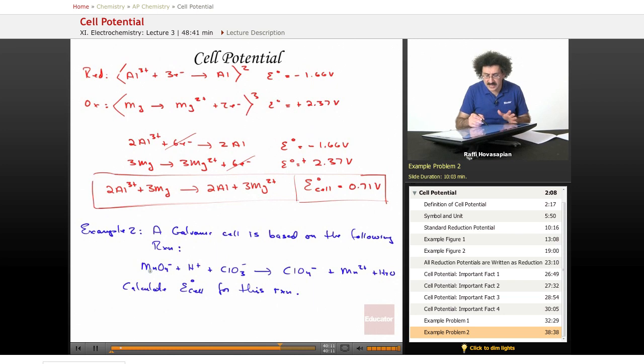Permanganate, manganese is being reduced. It's going from positive 7 to positive 2. Chlorine is being oxidized. 2 to 3 is 6. This is going to be plus 5. This is going to be plus 7. This is going from a positive 5 state to a positive 7, so it's being oxidized. So as written, our permanganate is being reduced and our chloride is being oxidized.